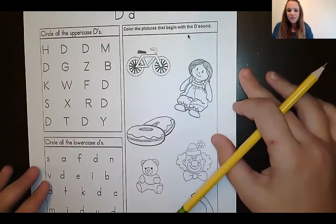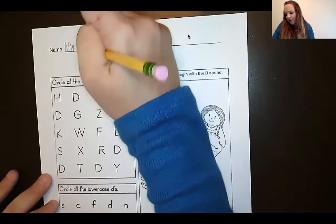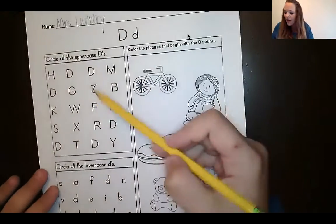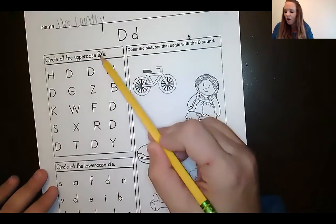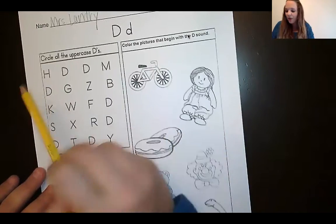First thing is always the same. Pick up your pencil and write your name. Okay, this top part right here says to circle all of the uppercase Ds. When I get to an uppercase D, I want you to tell me to stop. Here we go.